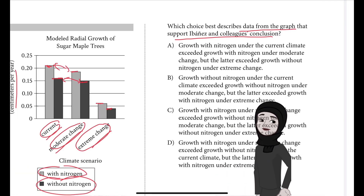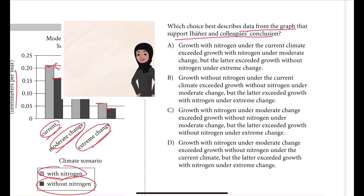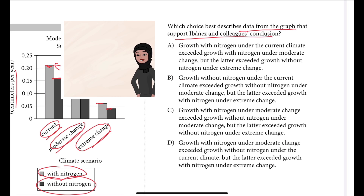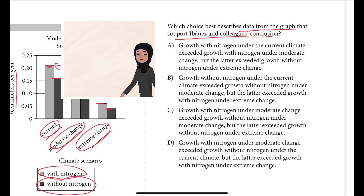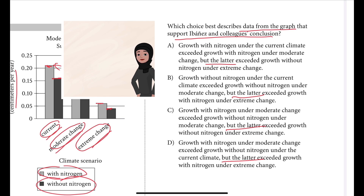Choice A: growth with nitrogen under current climate exceeded growth with nitrogen under moderate change, but the latter exceeded growth without nitrogen under extreme change. Choice B: growth without nitrogen under current climate exceeded growth without nitrogen under moderate change, but the latter exceeded growth with nitrogen under extreme change. Choice C: growth with nitrogen under moderate change exceeded growth without nitrogen under moderate change, but the latter exceeded growth without nitrogen under extreme change. Choice D: growth with nitrogen under moderate change exceeded growth without nitrogen under current climate, but the latter exceeded growth with nitrogen under extreme change.